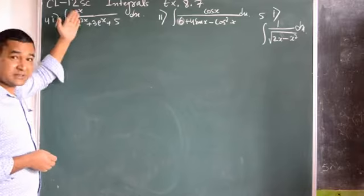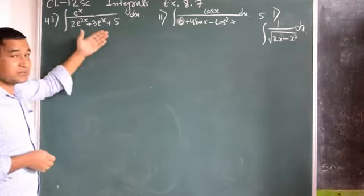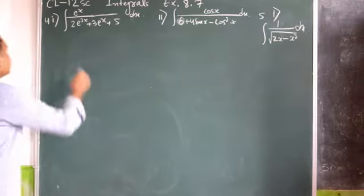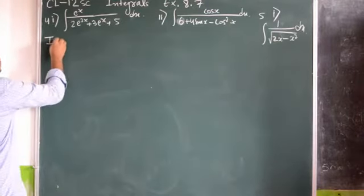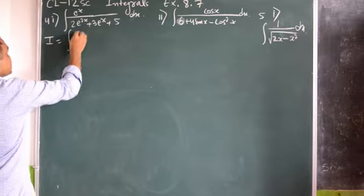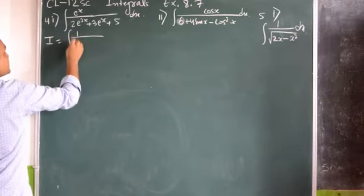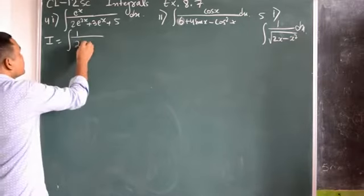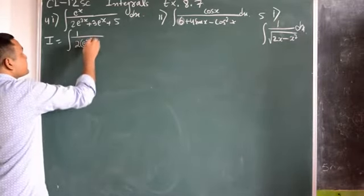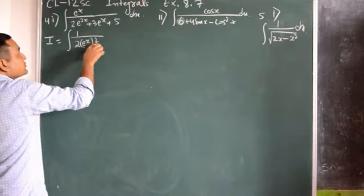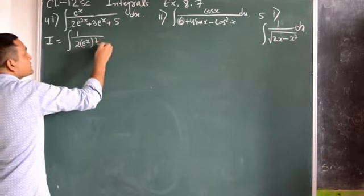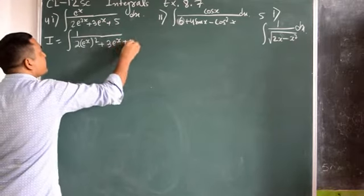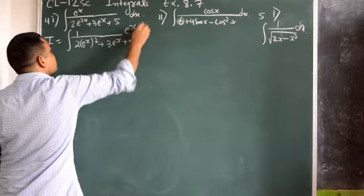Because the differentiation of e^x is e^x, we are going to substitute it and write the equation in its simplest form. So, I equals the integral of 1 divided by 2(e^x)^2 plus 2x plus 3e^x plus 5, then e^x dx.